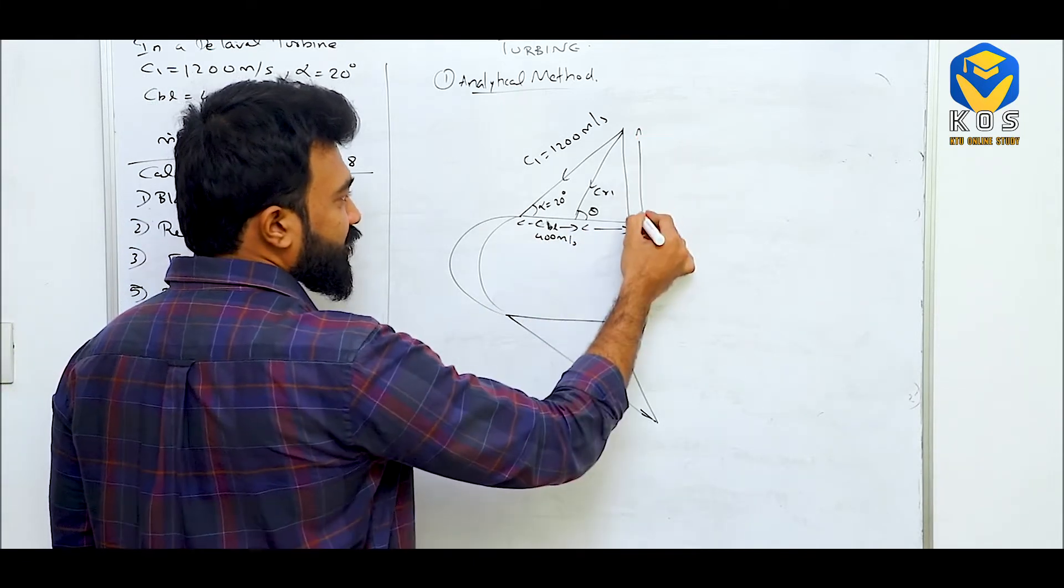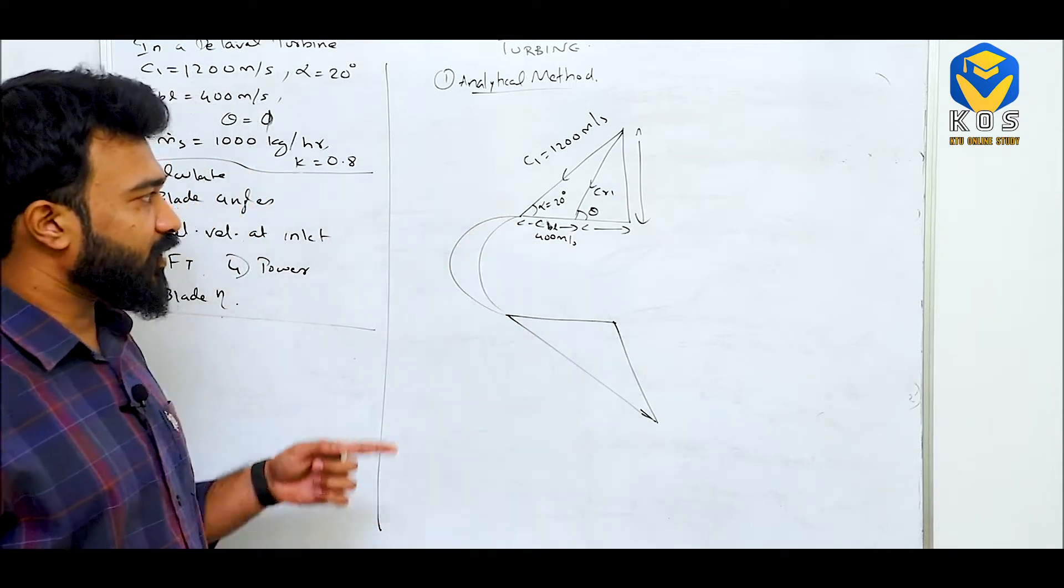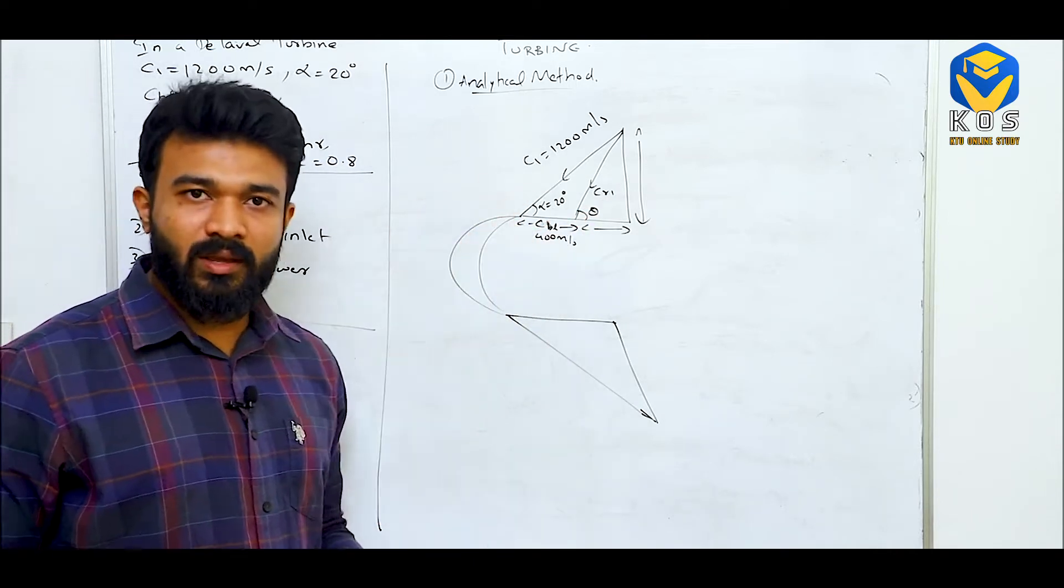If we turn into this distance, this becomes a right angle triangle. And from that, CR1 and theta can be easily measured.